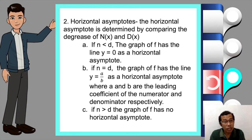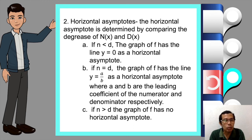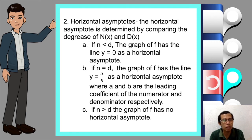The second asymptote is the horizontal asymptote. The horizontal asymptote is determined by comparing the degrees of the numerator and the denominator, n(x) and d(x). For the first case, if n is less than d, the graph has the line y = 0 as its horizontal asymptote. If n is equal to d, the graph has the line y = a/b as the horizontal asymptote, where a and b are the leading coefficients of the numerator and denominator respectively. If n is greater than d, the graph has no horizontal asymptote.